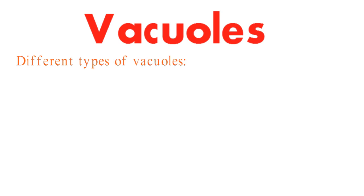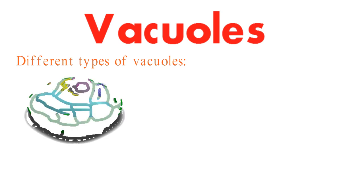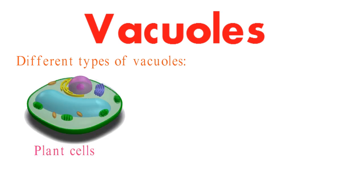Vacuoles, the cellular compartments, come in various types, each tailored for specific tasks. In plant cells, the central vacuole takes center stage, acting as a versatile reservoir for water, nutrients, and waste.